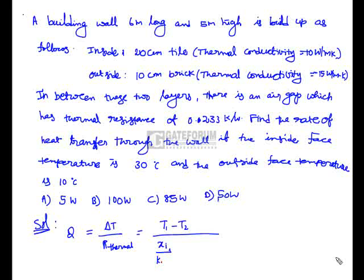The total thermal resistance is given by the thickness divided by thermal conductivity times surface area for each layer, plus the thermal resistance of the air gap. This gives us terms for both the tile and brick layers in series.